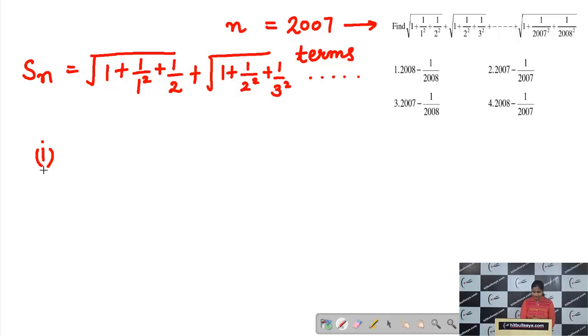See the first option that is 2008 minus 1 upon 2008. Since we are considering 2007 to be N, that's why my first option will become N plus 1 minus 1 upon N plus 1. Since N was 2007 that's why 2008 will be N plus 1.